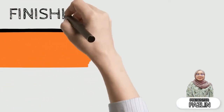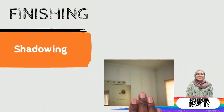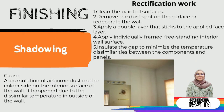The last defect of finishing is shadowing. The reason for this defect is the accumulation of airborne dust on the cold side of the interior surface of the wall, due to dissimilar temperatures on the outside of the wall. The rectification work: clean the painted surfaces and remove the dust spots or redecorate the wall; apply a double layer adhering to the applied face layer; apply to individually framed, free-standing interior wall surfaces; and insulate the gap to minimize the temperature difference between the component and panel.